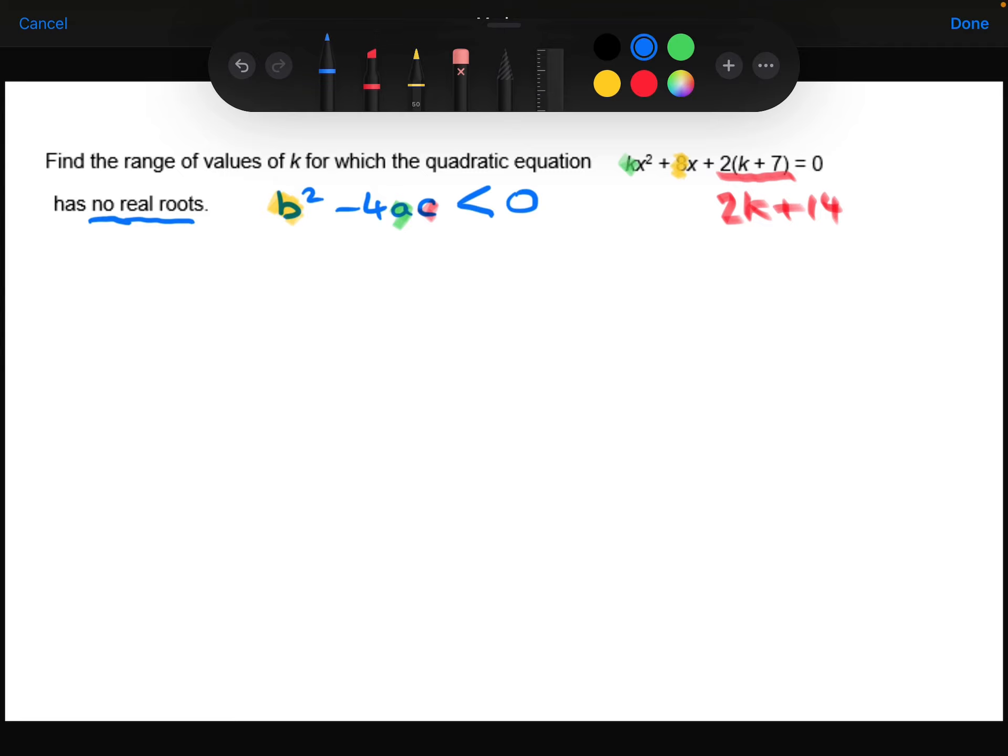So substituting all of those, the b, like I said, is 8, minus 4 lots of the a, which is k, times the c, which we saw is 2k + 14.